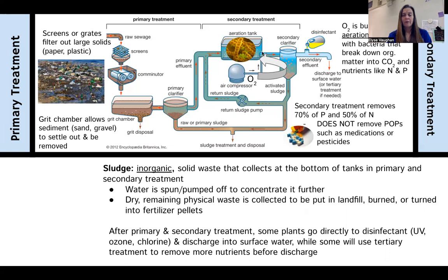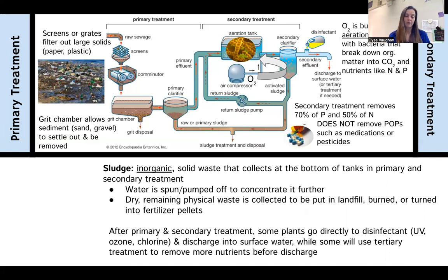After the aeration tank, material goes into a secondary clarifier where solid material is pulled down. If that solid is activated sludge containing bacteria, it gets pumped back into the tank to keep the bacteria working. Sludge is the inorganic solid waste that collects at the bottom of tanks during primary and secondary treatment. The water is spun off to concentrate it further, and the dry remaining physical waste is collected — it may be put in a landfill, burned (possibly generating electricity), or turned into fertilizer pellets.